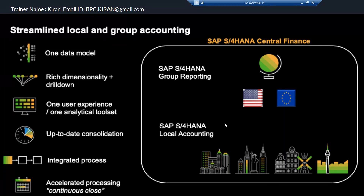In the same S4HANA system, we have the universal journal, the group reporting data table (ACDOCU), and the ICA document table for intercompany matching and reconciliation — all in the same S4HANA. For all three areas — legal consolidation, local close, and intercompany matching and reconciliation — we use Fiori as the front-end. One user experience, one analytical toolset using embedded analytics, with all Fiori apps available. It is a tightly integrated process.